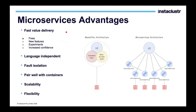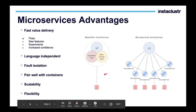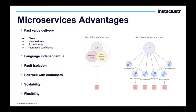Some of the advantages: it has very fast value delivery, fixes are very easy and fast to do, as well as new features, experiments — and that increases confidence. Microservices are language independent, so you can have multiple programming languages to code your microservices, giving additional flexibility. Fault isolation means that if there is some error or bug in one microservice, it will not impact other services if you design it correctly. It pairs very well with Docker methodology. It is very, very scalable and flexible because each service is independent and loosely integrated with each other.